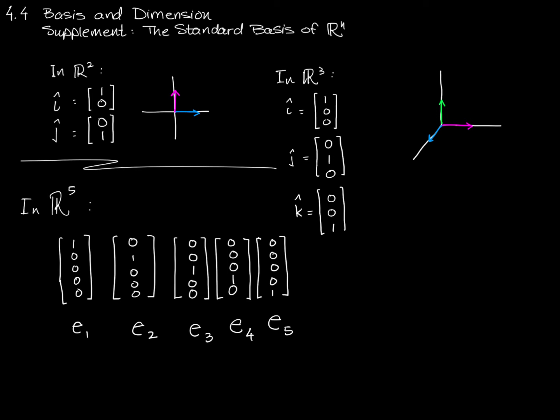And we'll give this set of very special vectors its own special name. We'll call it e sub n. e is the set of the vectors. In fact, this one is e sub 5. This is another way to write the collection e sub 5.